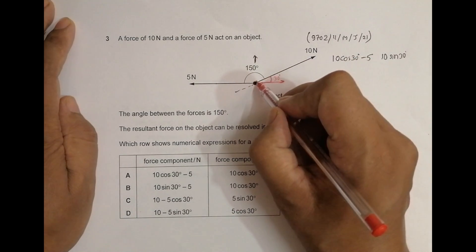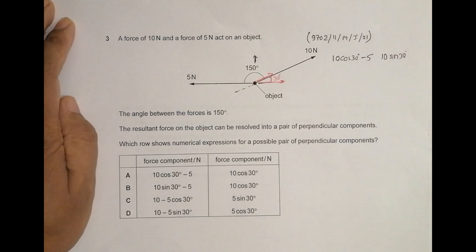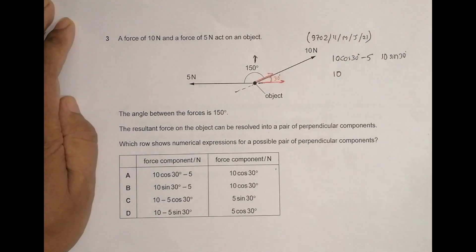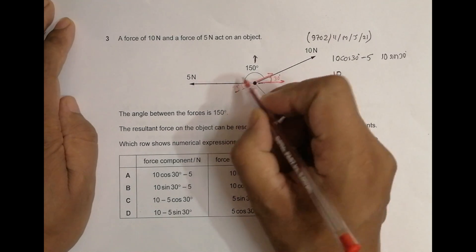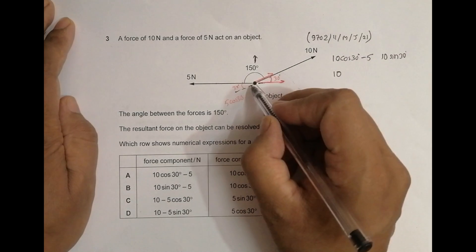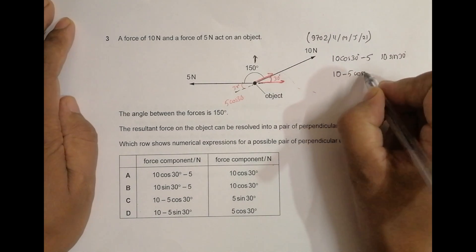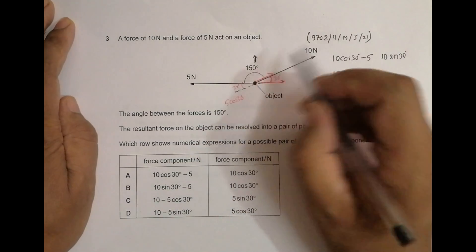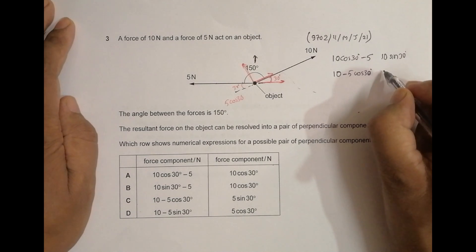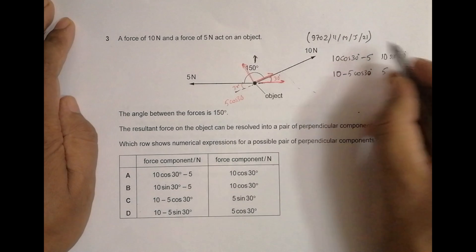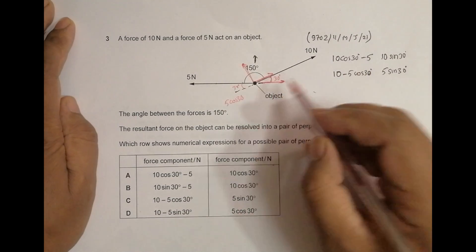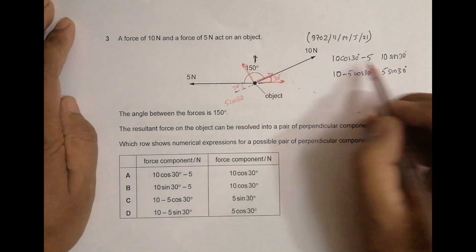Let me find the components in a different direction — along the 10 Newton force. In this direction, the component of the 10 Newton force is simply 10. The angle here for the 5 Newton force is again 30 degrees, so its component in this direction is 5 cos 30 degrees, giving 10 − 5 cos 30 overall. In the perpendicular direction, the component of the 5 Newton force will be 5 sin 30 degrees.